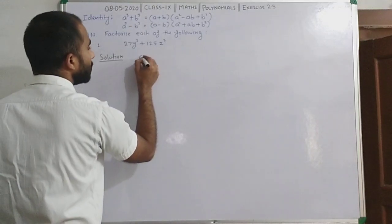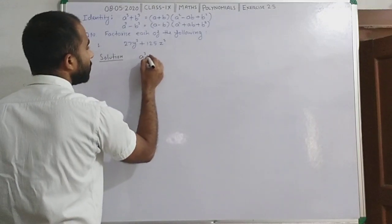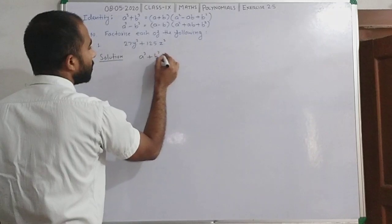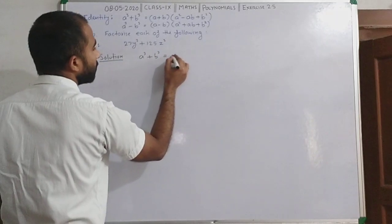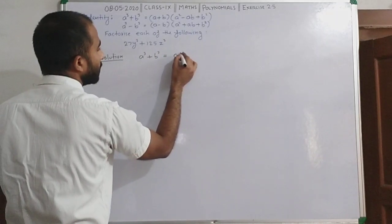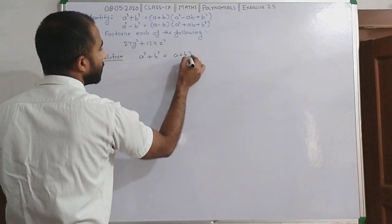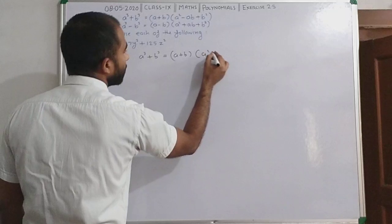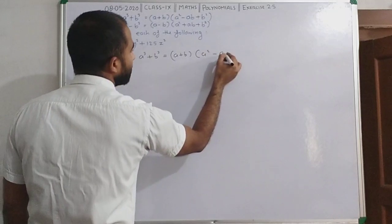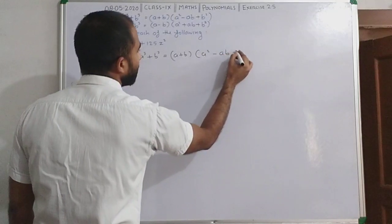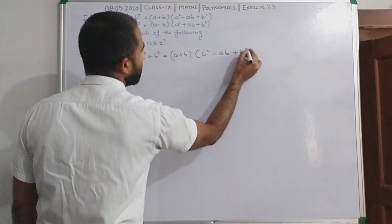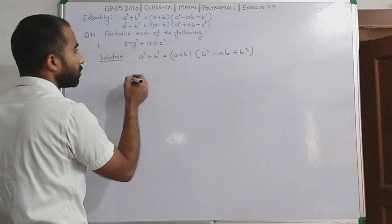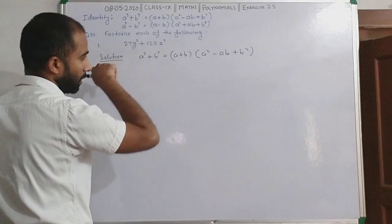A cube plus B cube gives us A plus B, then A square minus AB plus B square. There is a question here — we will relate it to the identity.